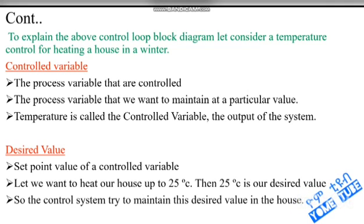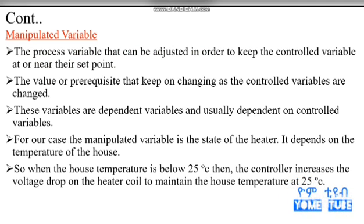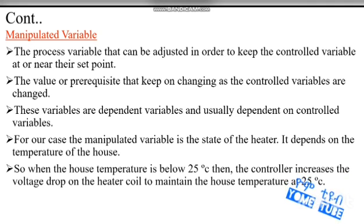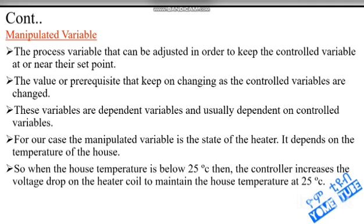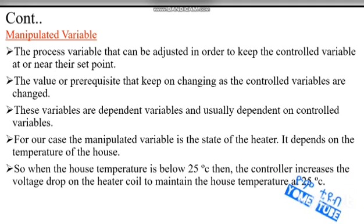The desired value is a set point. The result of the value of a controlled variable is the control system. The desired value is a set point. This is the manipulated variable — it is the process variable that can be adjusted in order to keep the controlled variable at or near their set point.